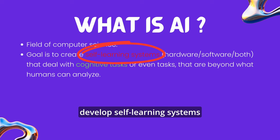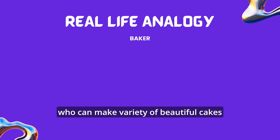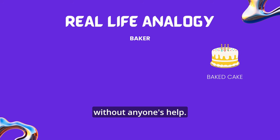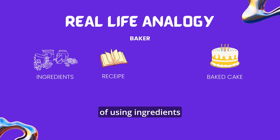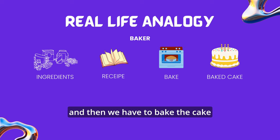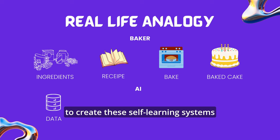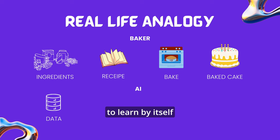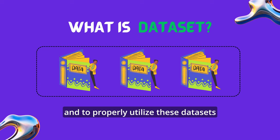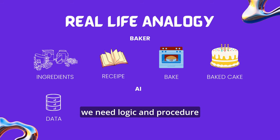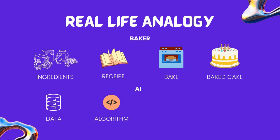But how are we going to develop a self-learning system? Let's understand this with a real life example. Suppose you want to become a baker who can make a variety of beautiful cakes without anyone's help. To do that we need ingredients, we should know the recipe of a cake to understand the overall process of using ingredients, and then we have to bake the cake to get the desired result. Similarly, the ingredient for AI to create this self-learning system is data, and it needs massive data to learn by itself. This massive data, when grouped into a collection, is called a dataset. And to properly utilize these datasets, we need logic and procedures that define how to process them — these procedures are called algorithms.